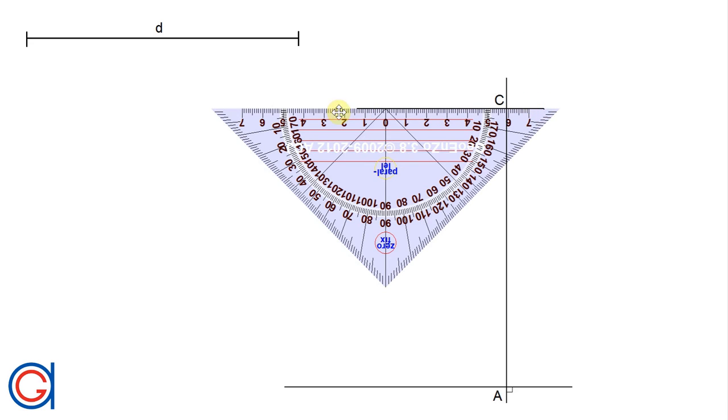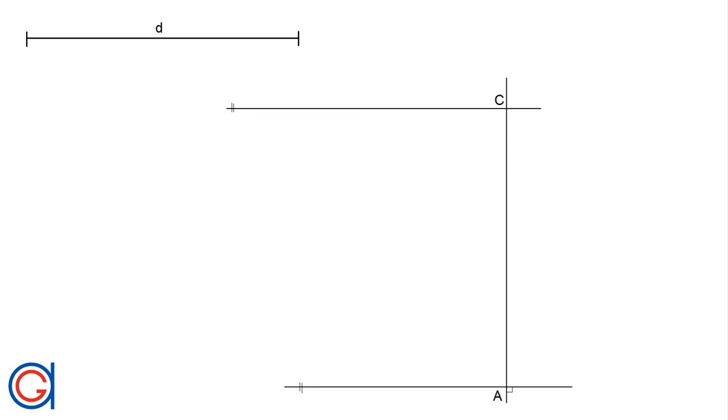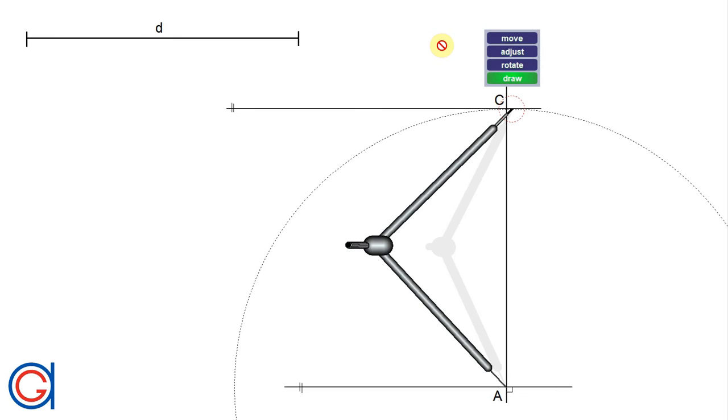The next step, we are going to draw a horizontal line from vertex C, as can be seen here, and mark it with a parallel symbol to horizontal line A.